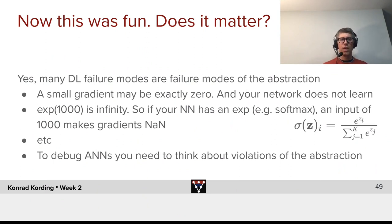Also, e to the power of 1000 is infinity. So, if your neural network has, say, an exponential, then all of a sudden you have infinity. So, all gradients vanish in that case. In fact, they become undefined.